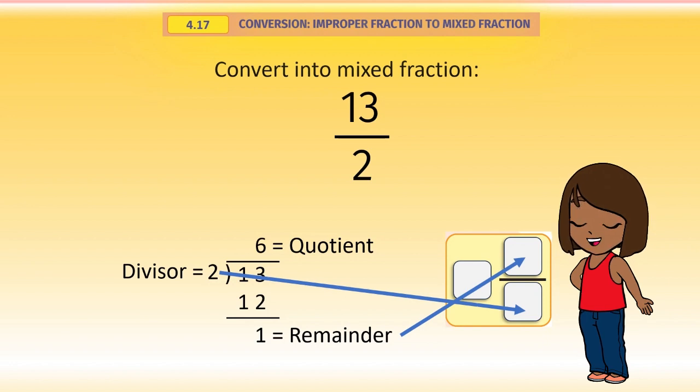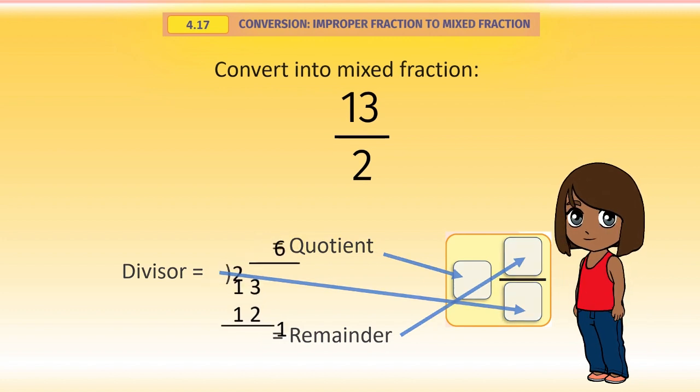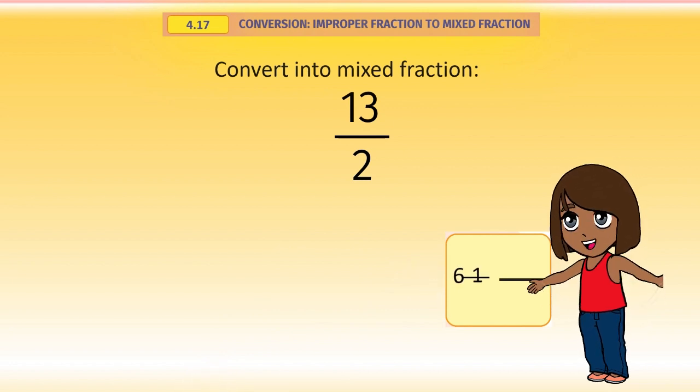The remainder goes to the top, and quotient is the whole number component of the mixed fraction. Then answer is 6, 1 by 2, or 6 and a half.